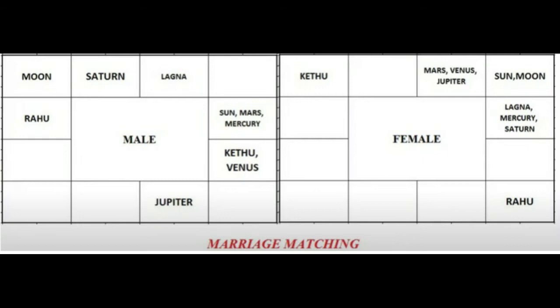We are combining these three planets: the second house lord is Mercury, the fourth house lord is Sun, and the tenth house lord is Saturn. Now we have to see the relative positions between these three planets. Mercury and Sun are placed in kendra, Mercury and Saturn are placed in kendra, and Saturn and Sun are also placed in kendra in the boy's chart. So here everything is fine.